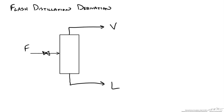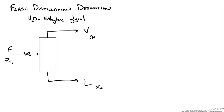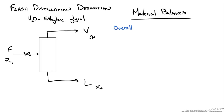For our example, we have water and ethylene glycol. Water is our more volatile component. We start with feed composition z for water, vapor composition y_H of water in the vapor stream, and liquid composition x_H of water in the liquid stream. For our material balances, we write an overall balance: feed F equals vapor V plus liquid L.